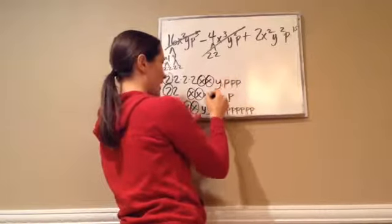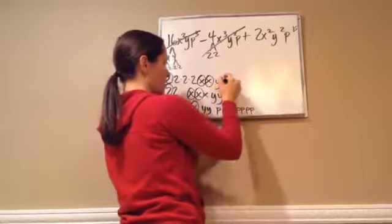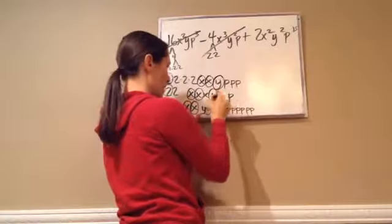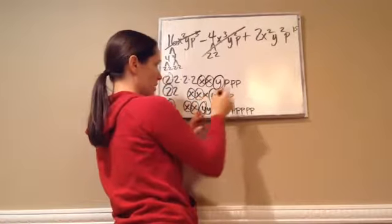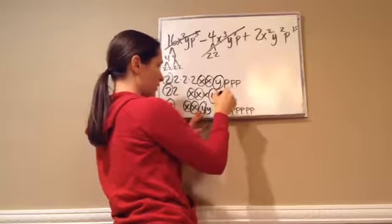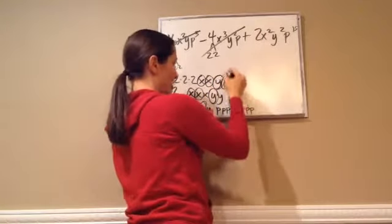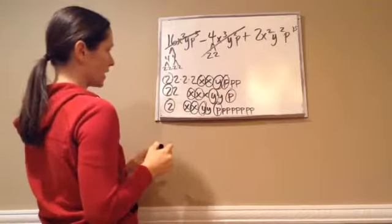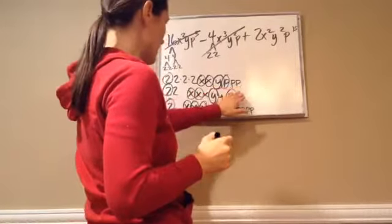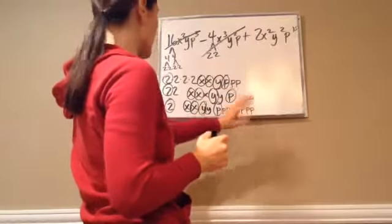And then there's not another y up here, even though there is in these two, but it's not common among all three. Then we have one p, one p, and one p. Then we have two other p's, no p's, and then several p's. So since there's not another common among all three, we just stop there.